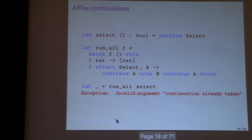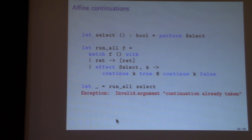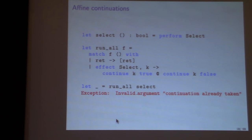An important idiosyncrasy of the OCaml implementation is that continuations are affine — you can use them not at all, or once, but not twice. This differs from most treatments of algebraic effects. The lovely run_all example shown earlier will not give a list of all possible results in OCaml — it will raise an exception instead. There are three reasons for this. First, performance: continuing a continuation uses up the stack it represents, so allowing multiple uses means copying the stack each time, which is expensive.